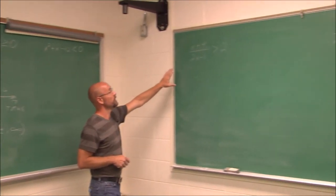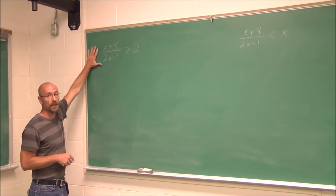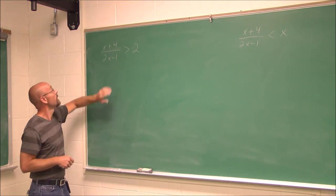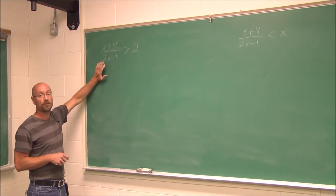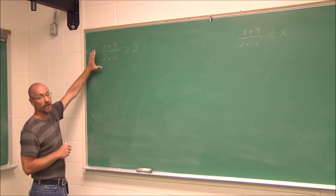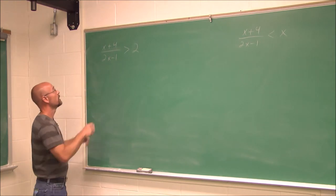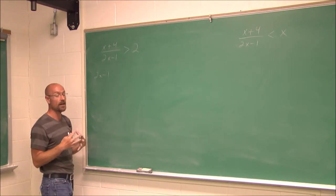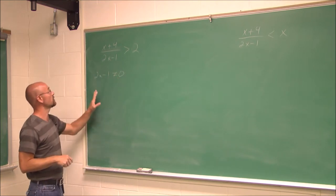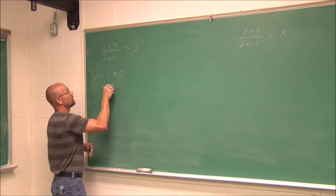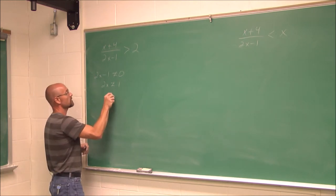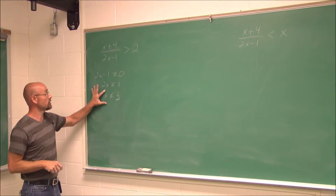Let's look at this one here — we have a rational inequality. We have essentially a fraction greater than a number, and we have some variables. The first thing we want to do is identify domain, because this is a rational inequality. We have an x in the denominator, so I can never divide by 0. Whatever this value is, it cannot equal 0. I'll solve it: add 1 to both sides — 2x cannot equal 1; divide by 2 — x cannot equal 1/2. This is our restriction.